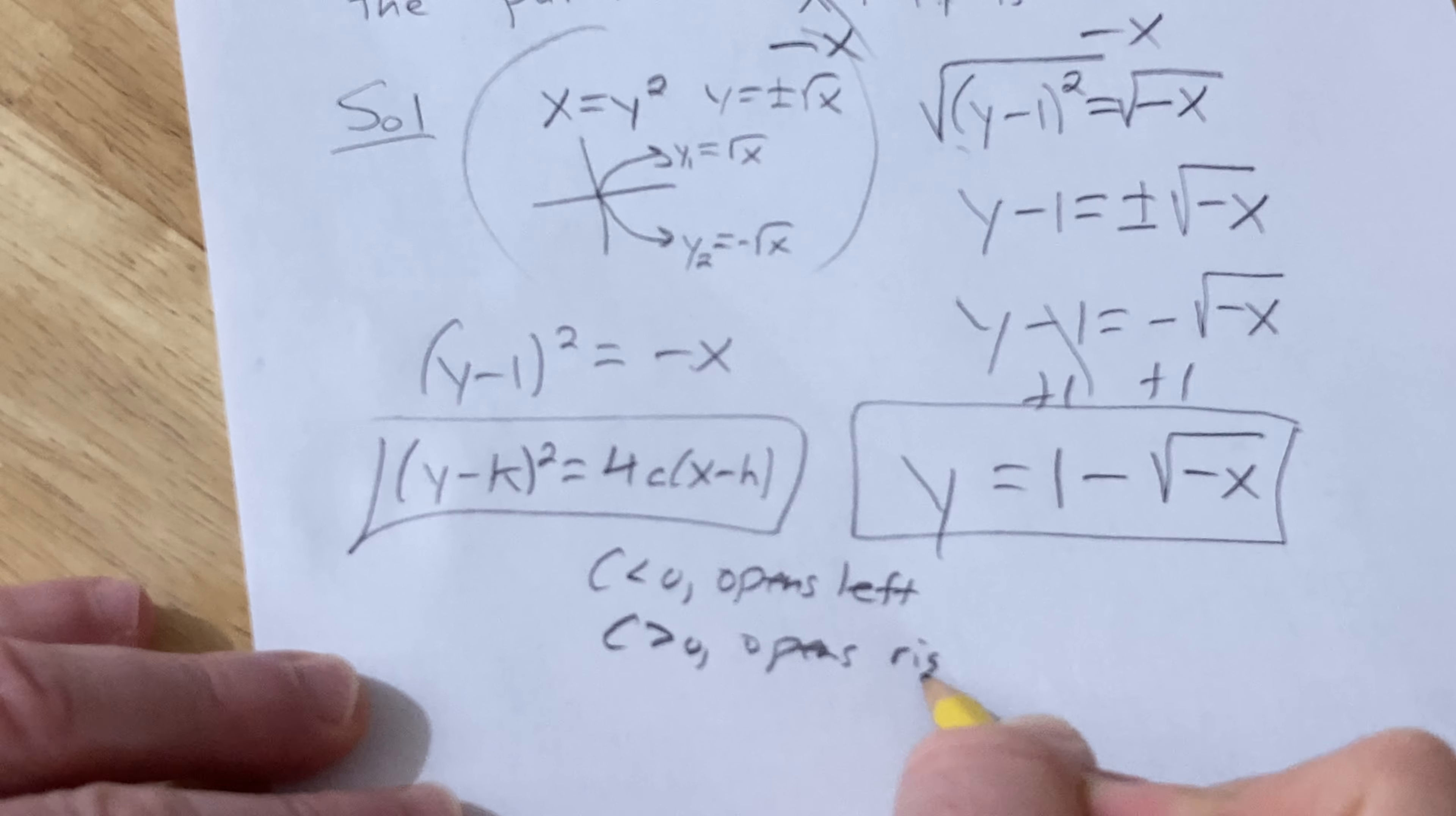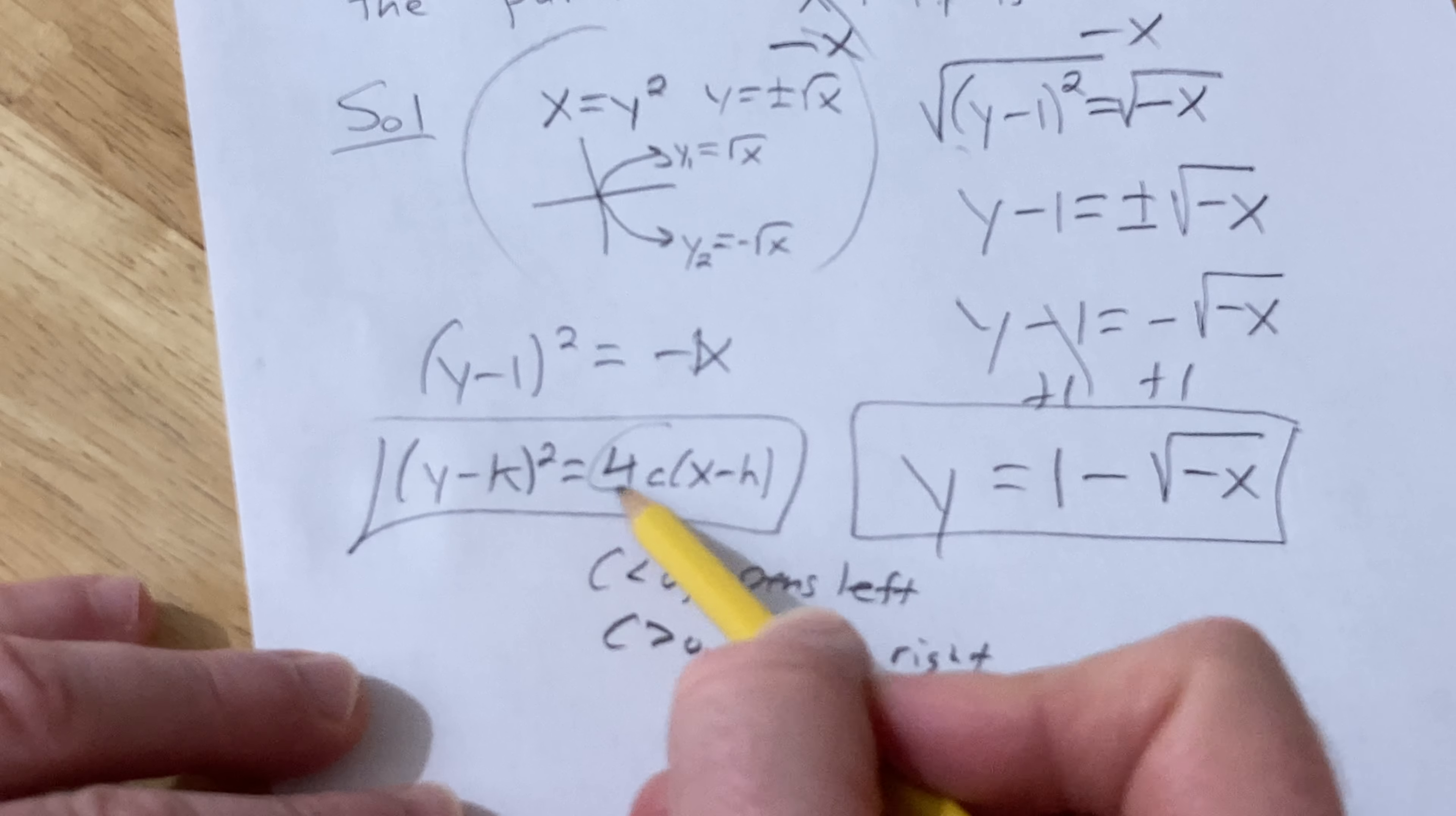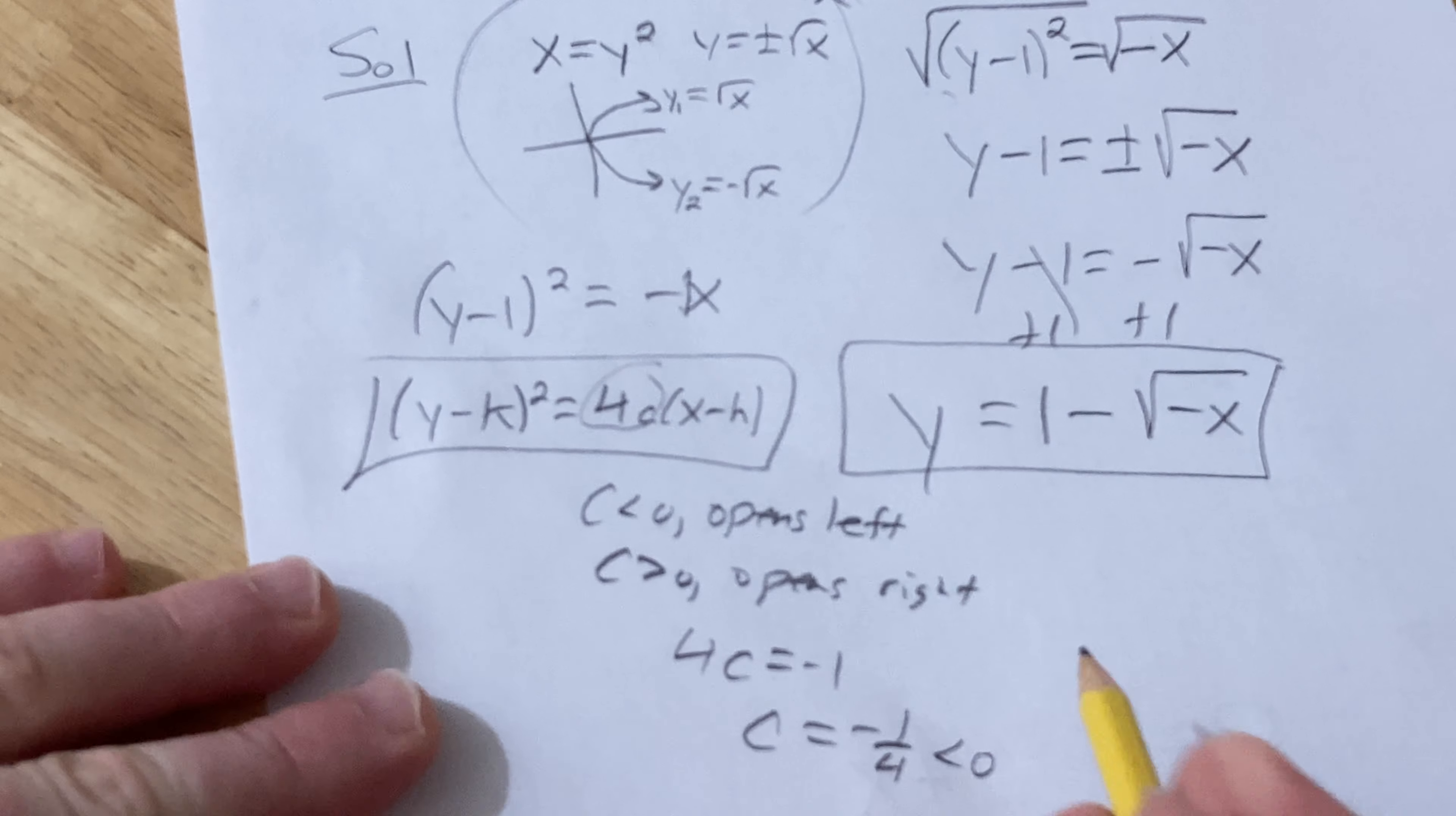I didn't ask for that in the problem, but I'll just show you some more math. And then you could solve here for c by setting 4c equal to negative 1. So c is equal to negative one-fourth, it's less than zero, so it opens left.